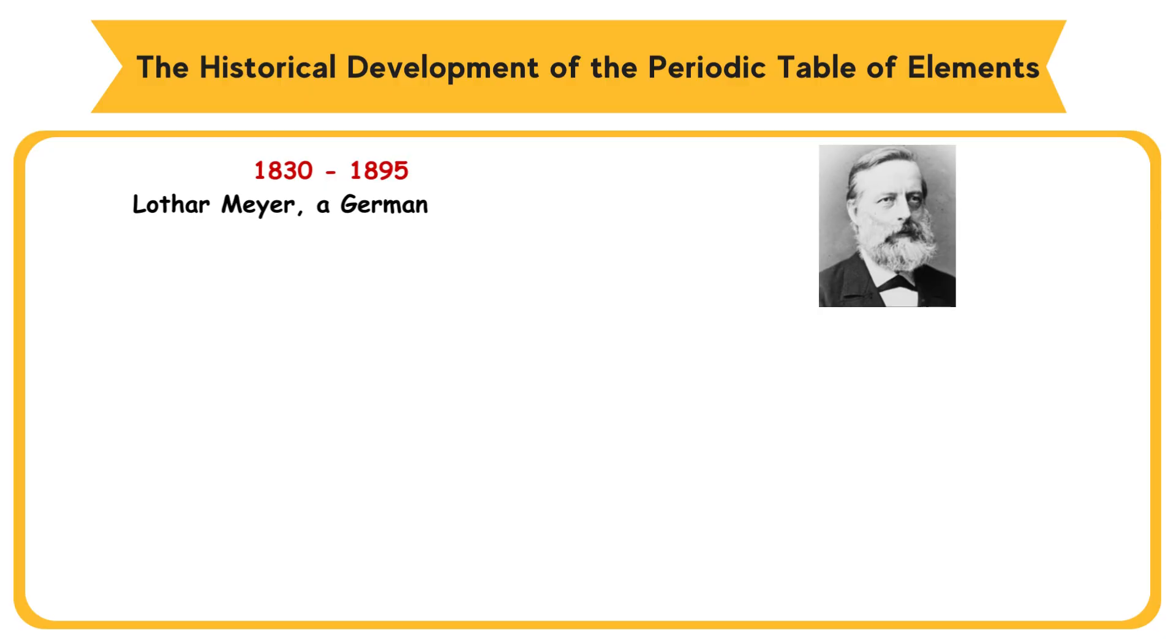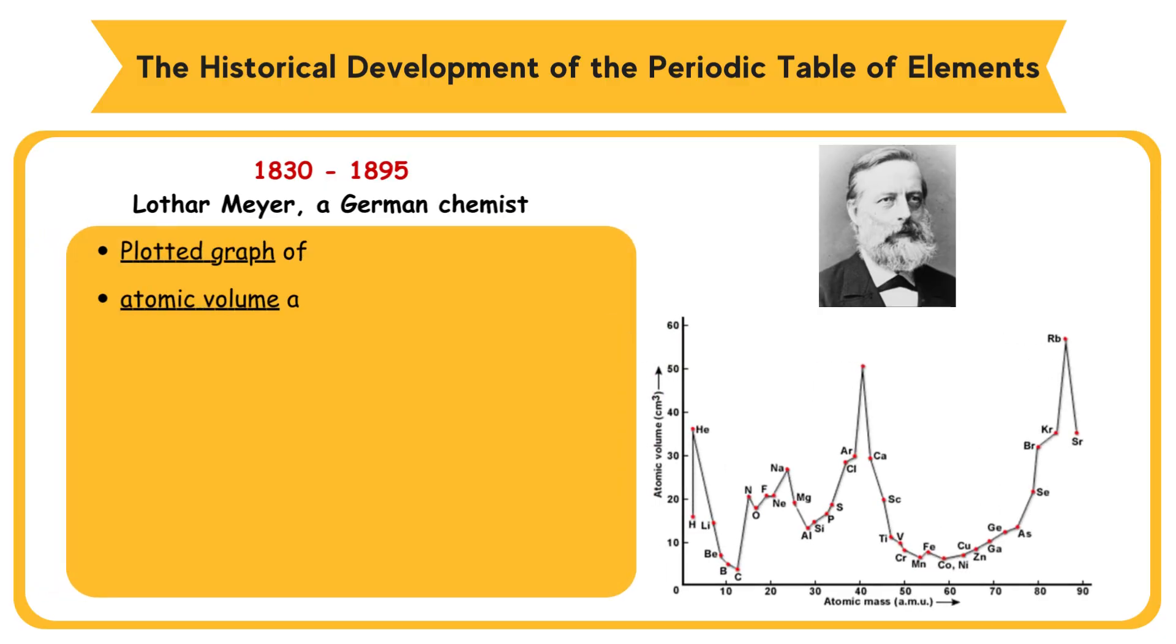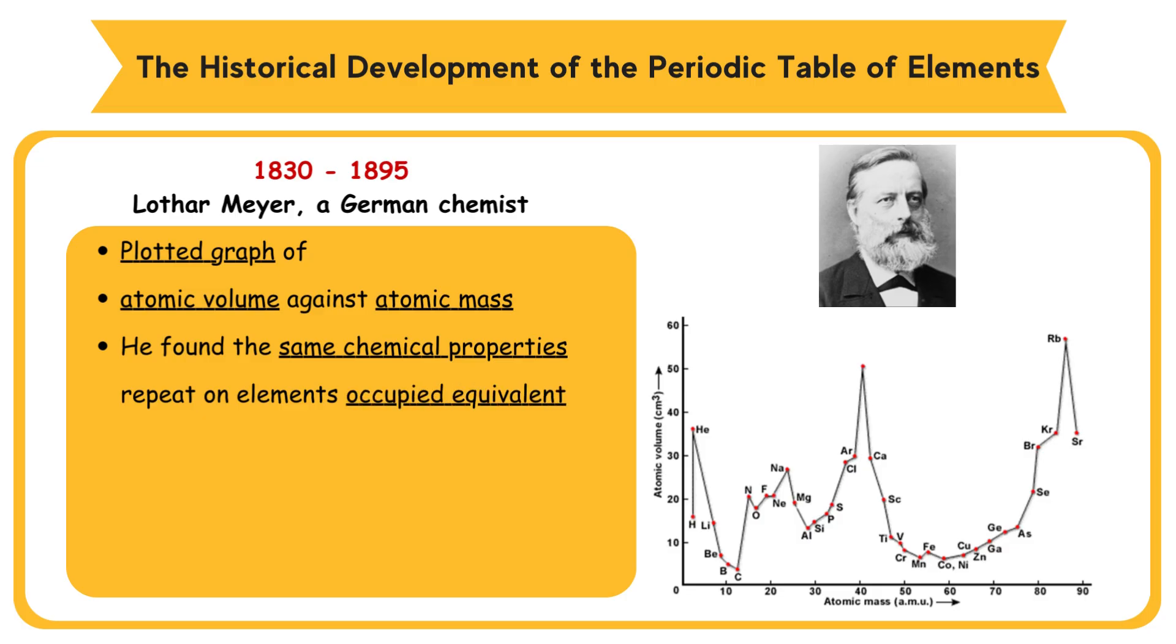1830-1895, Lothar Meyer, a German chemist, plotted graph of atomic volume against atomic mass for all discovered elements. He found the same chemical properties repeat on elements occupied equivalent position on the curve.